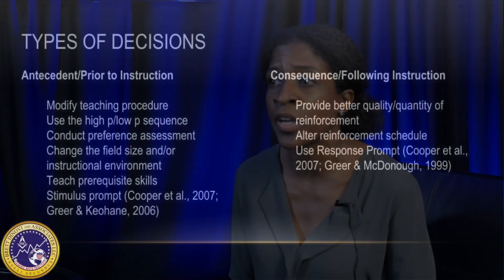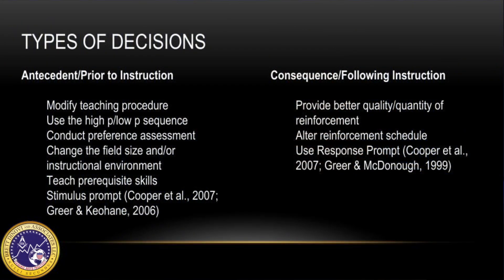So next, let's talk about what those decisions are — how do we change that instruction? We're either going to implement an antecedent strategy, which is prior to the instruction, or a consequence-based strategy, which is provided after the instruction. Some antecedent-based strategies would be to modify your teaching procedure, use a high probability/low probability sequence, conduct a preference assessment, change the field size and/or the instruction environment, teach prerequisite skills, or embed a stimulus prompt. Some consequence-based strategies might be to provide better quality or quantity of reinforcement, alter the schedule of reinforcement, or use a response prompt.